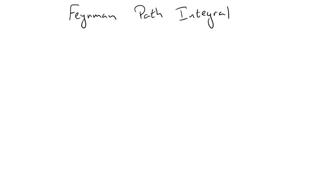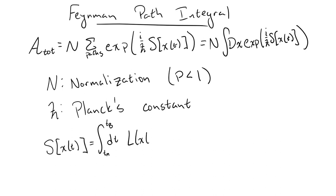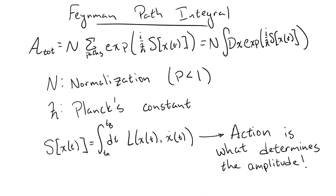Again, skipping this somewhat daunting derivation, one can find that the total amplitude can be written in this form, or more typically written as an integral, where the fancy integration measure just refers to the sum over all paths x of t. Now let me explain what everything means in this expression. The capital N is just a normalization. It's a number to ensure that probabilities don't exceed 1. H-bar is Planck's constant, a fundamental constant of the universe, and S is the action I was talking about earlier, the time integral of the Lagrangian.